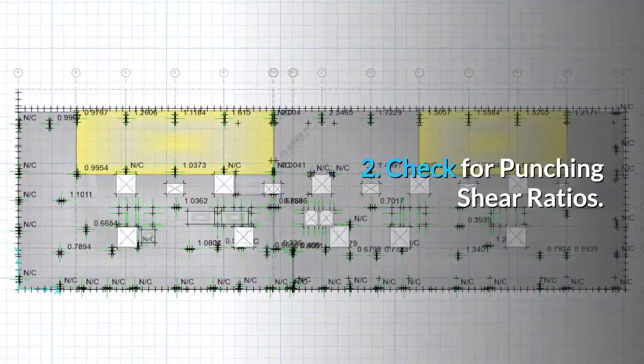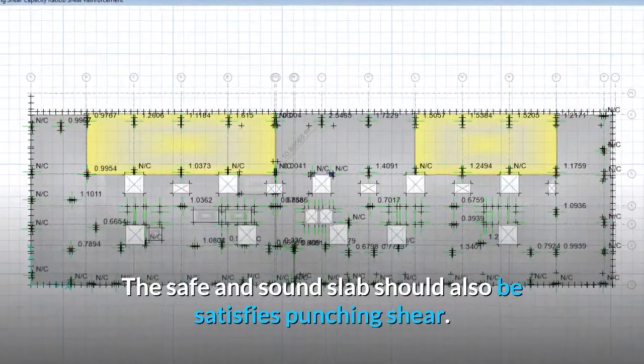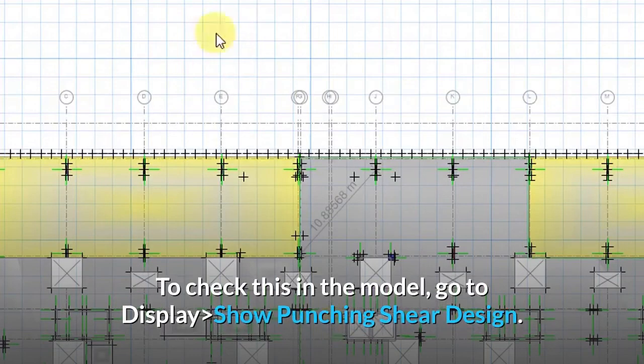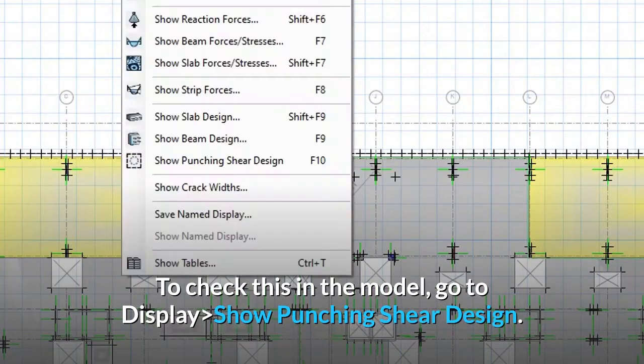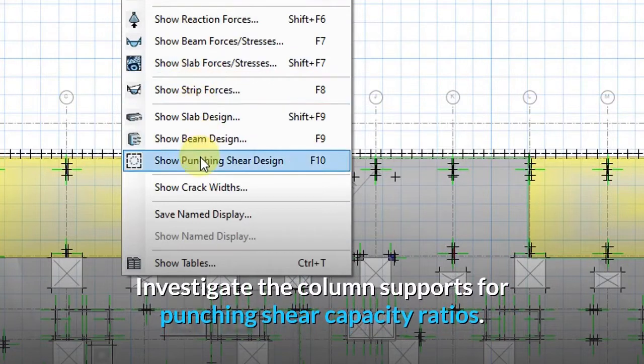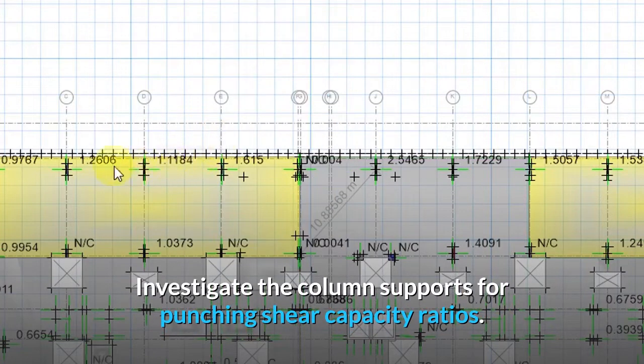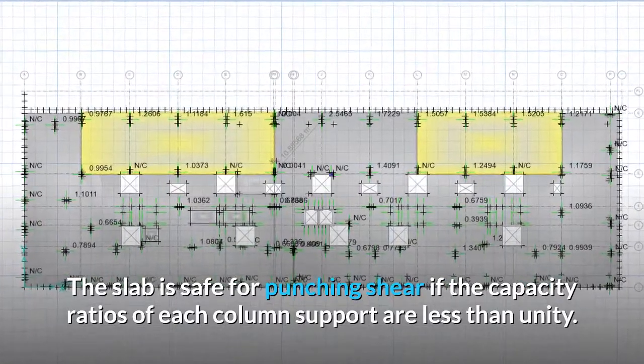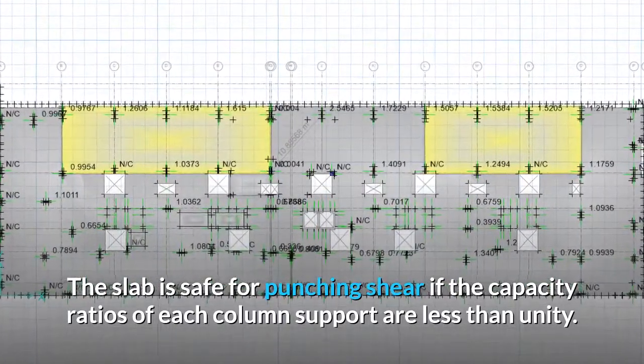The safe and sound slab should also satisfy punching shear. To check this in the model, go to display, show punching shear design. Investigate the column supports for punching shear capacity ratios. The slab is safe for punching shear if the capacity ratios of each column support are less than unity.